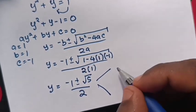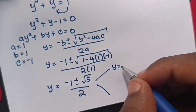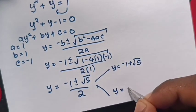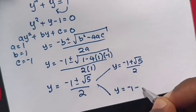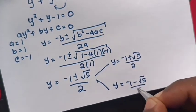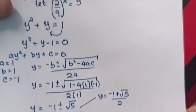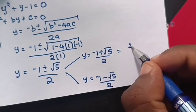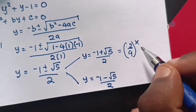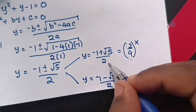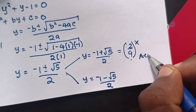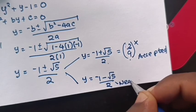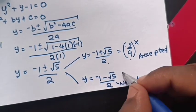We have two cases for values of y: y equals (negative 1 plus square root of 5) over 2. But recall we let y equal (2 over 9) power x. Here (2 over 9) power x is positive, so this case is accepted. But the other case gives a negative value of y, so that is rejected.